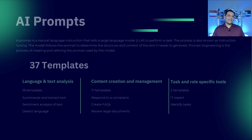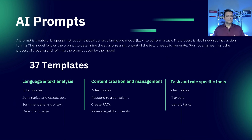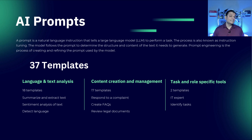Now let's take a look at the AI prompts. These are prompts that use the large language model to perform tasks. Out of the box there are 37 templates, and this number might change by the time you watch this video. The three different categories are: language and text analysis, content creation and management, and task and role specific tools.